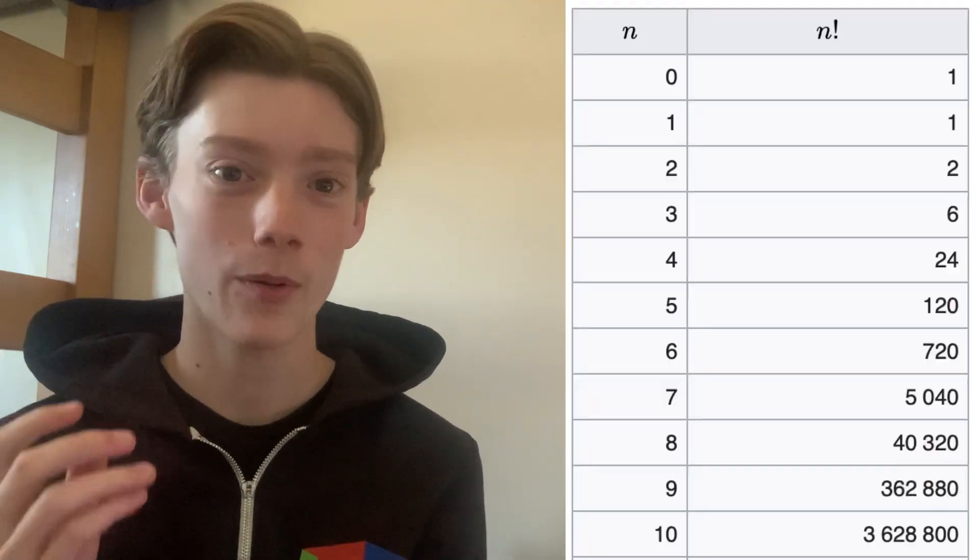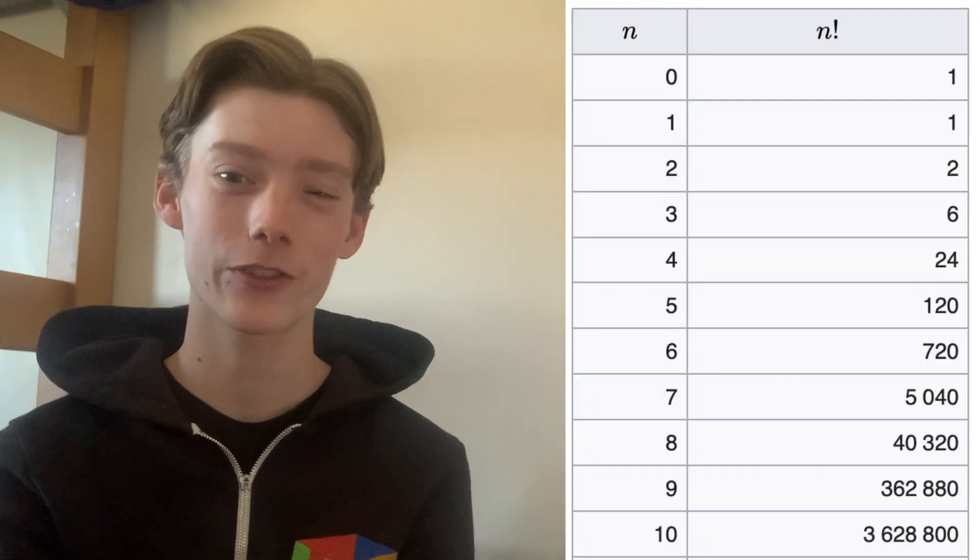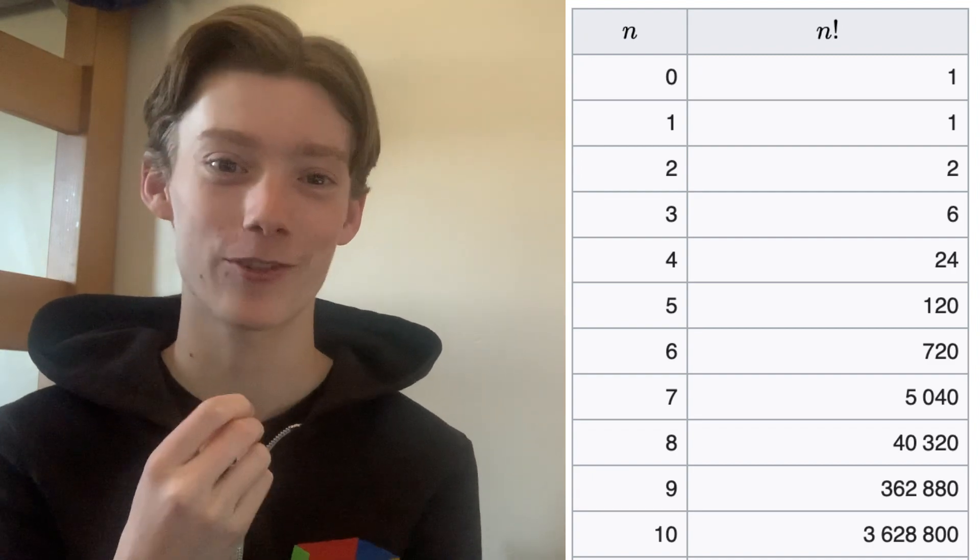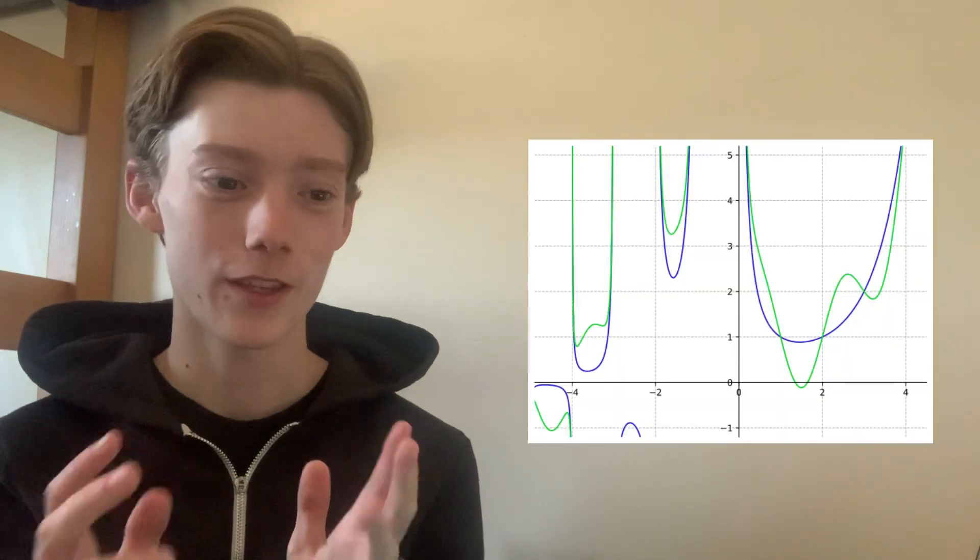Now the factorial function is only defined for positive whole numbers. So how are we going to get to a negative dimensional Rubik's Cube? So there have been attempts to sort of interpolate the factorial function and sort of find the values in between to make like a curve. And they call this the gamma function.